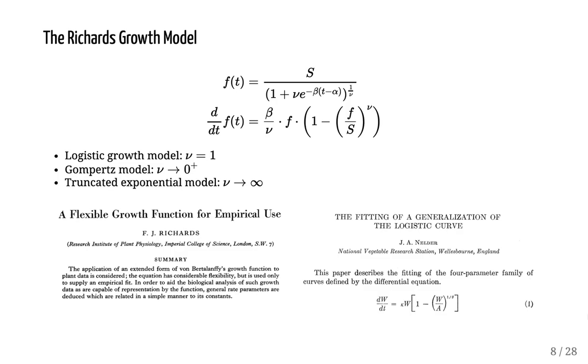The generalized logistic growth model is also known as the Richards growth model. It is a very flexible growth model and contains as sub-models the logistic growth model, the Gompertz model, and the truncated exponential model. There are many ways to parametrize the Richards model and we chose this specific parametrization. It varies between researchers, but mathematically they are all the same and this special parametrization makes the parameters interpretable.